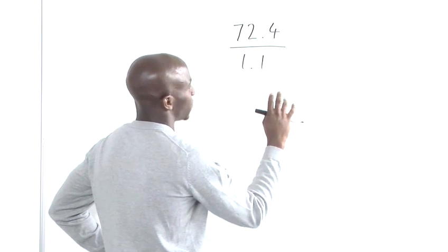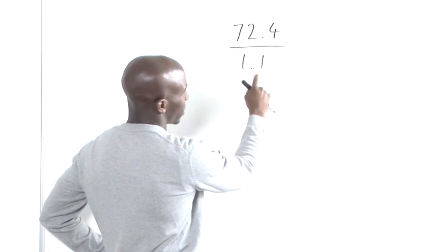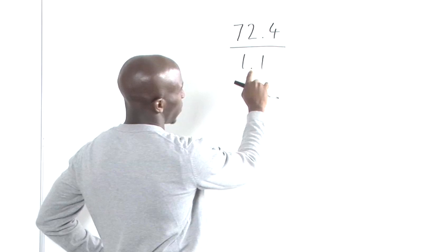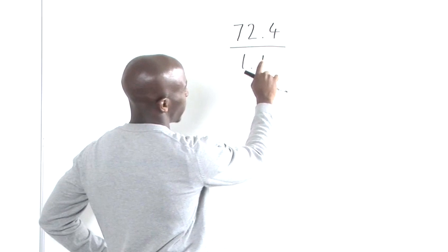Now, what we're trying to do on the denominator is remove the decimal point. So what we're going to do is bring the decimal point back here.